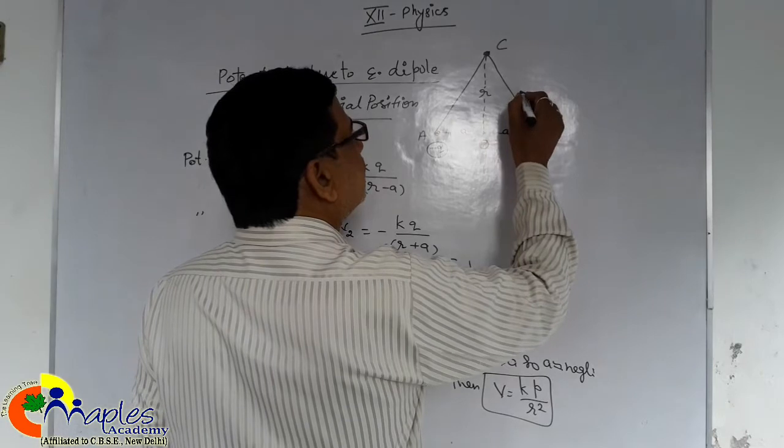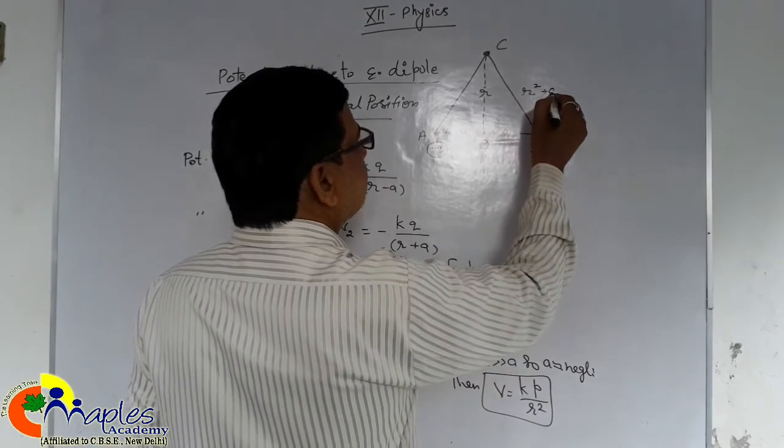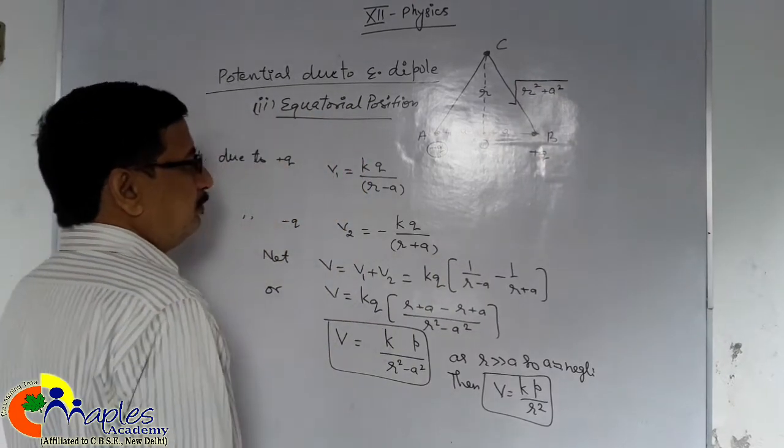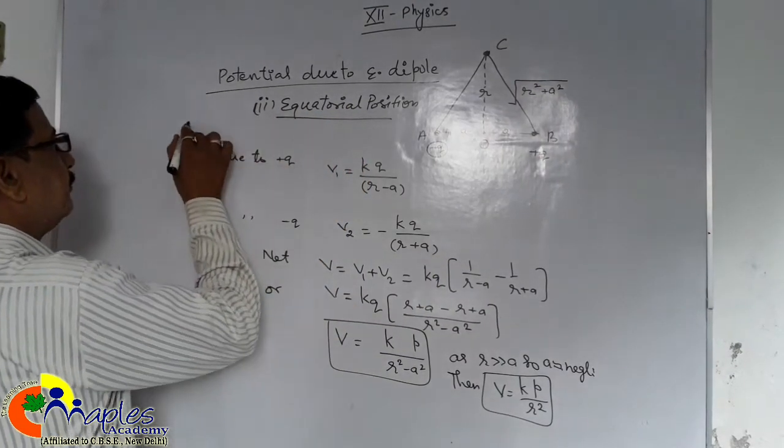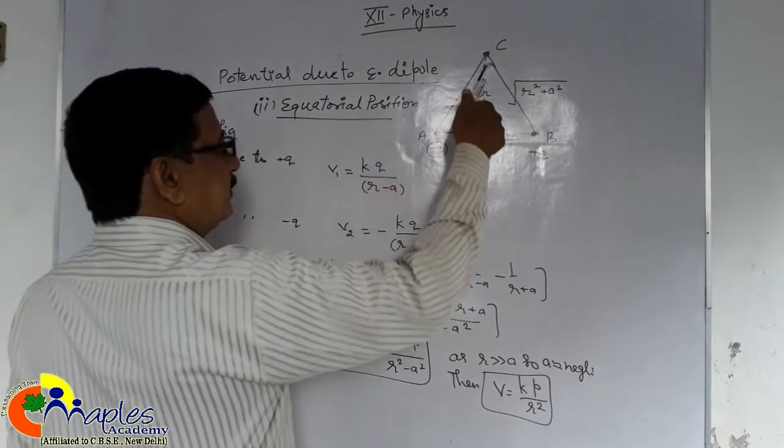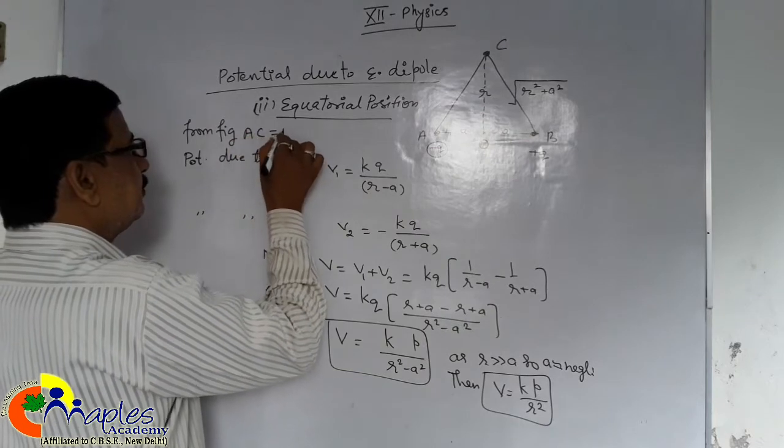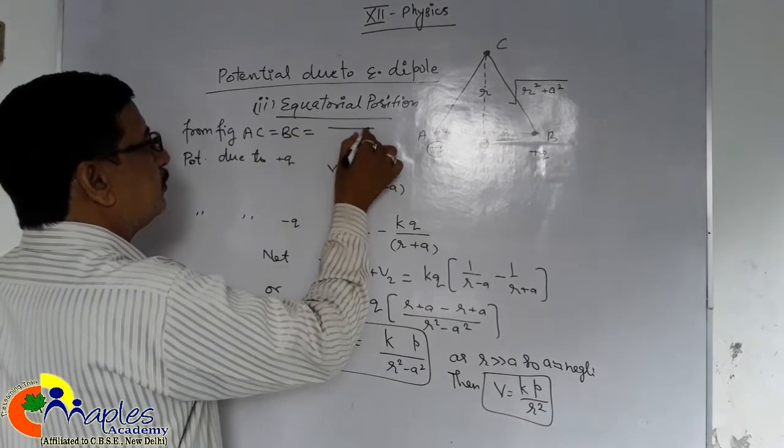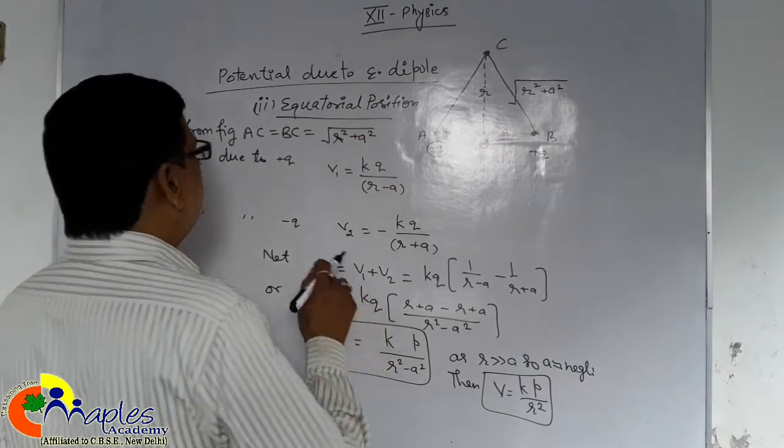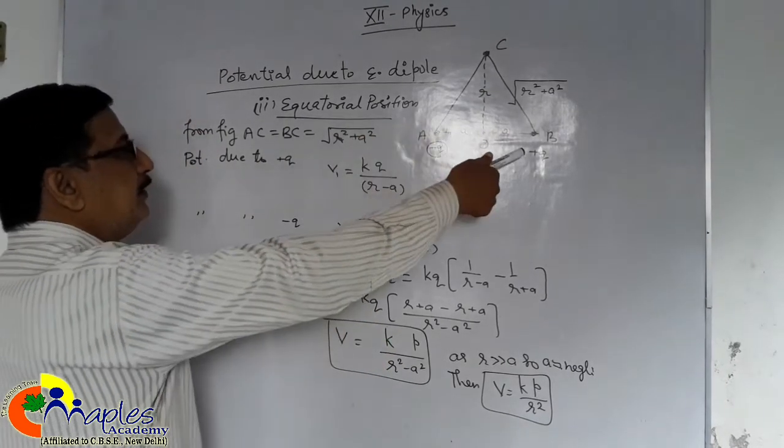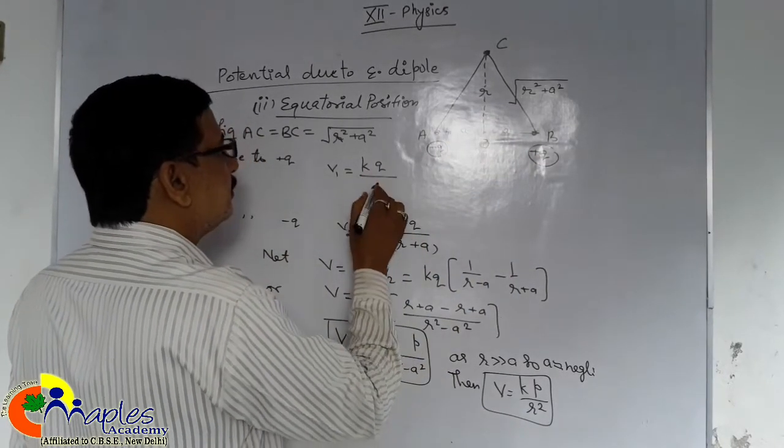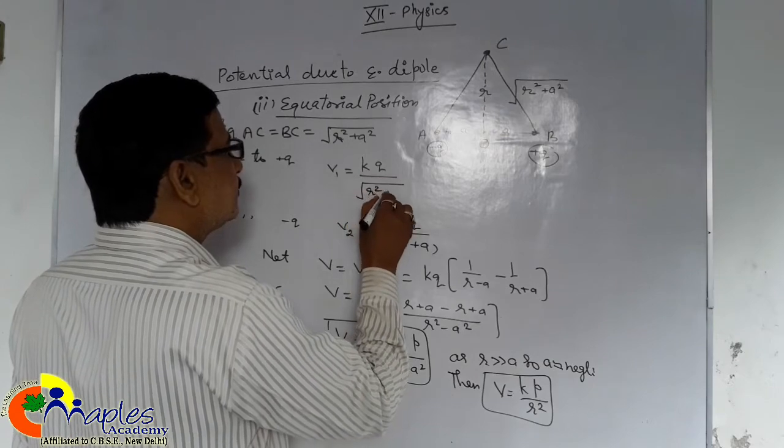And now this is R square plus a square and its root. AC is equal to BC is equal to root R square plus a square.